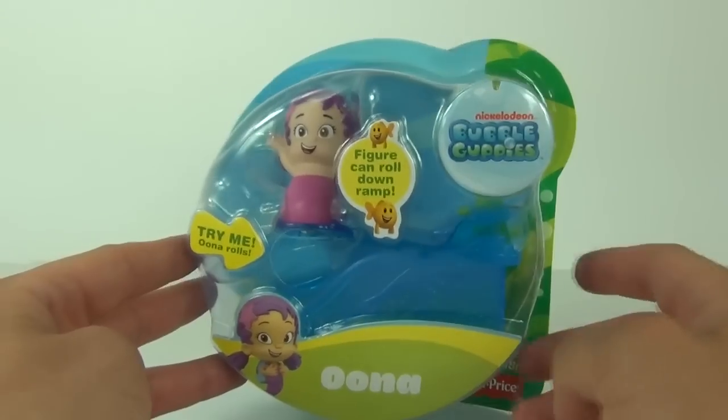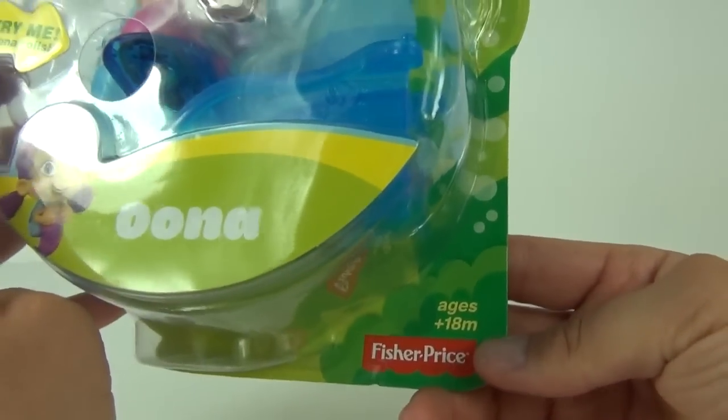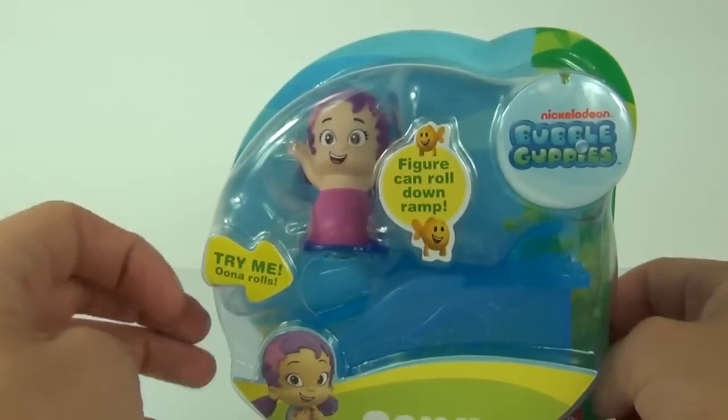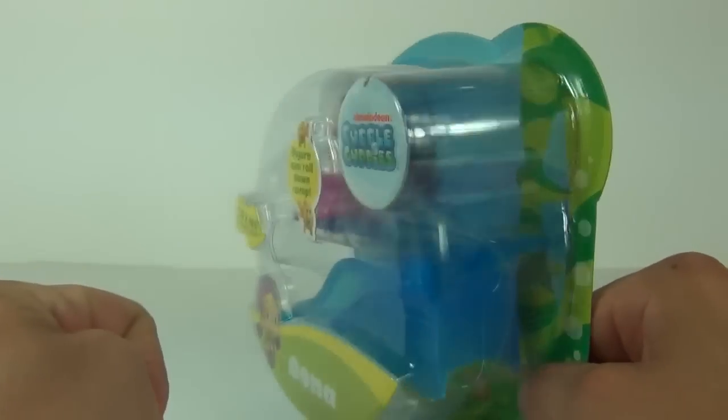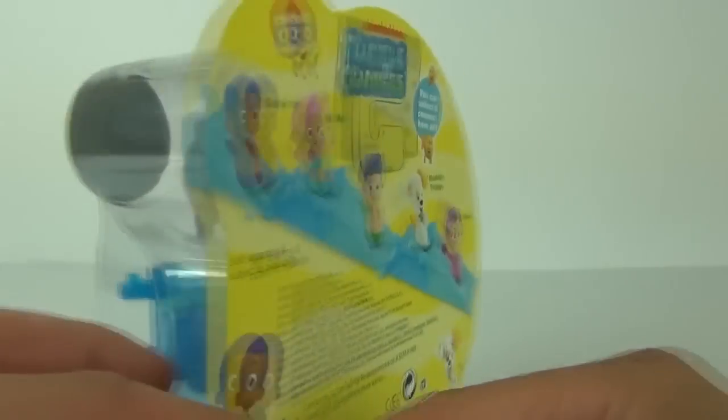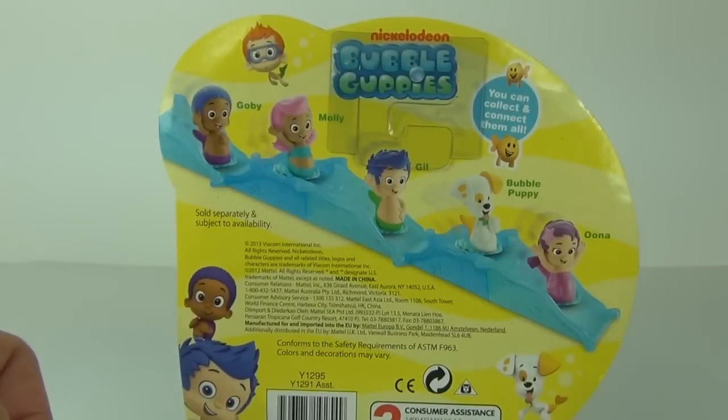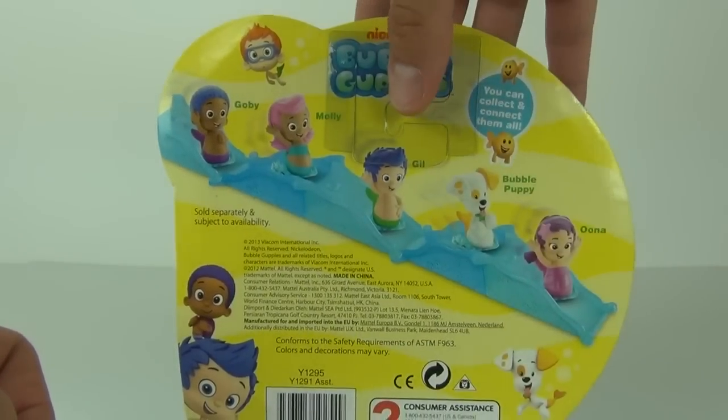Now these do have a price tag of around £5.99 here in the UK, and they are made by Fisher Price with an age recommendation of plus 18 months. They do come with a section of slide which you can link up with other figures if you buy them.